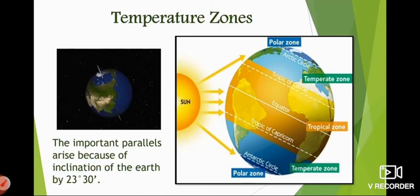From the Tropic of Cancer to the Tropic of Capricorn we have the tropical zone, because the intensity and duration of sunlight is more there — it occupies a larger area and the time period is also more. From the Tropic of Cancer to the Arctic Circle, and from the Tropic of Capricorn to the Antarctic Circle, we have the temperate zone, because the sun rays are slanting. From the Arctic Circle to the North Pole and from the Antarctic Circle to the South Pole we have the polar zone, where sun rays are very, very slanting. These temperature zones also give rise to pressure belts.